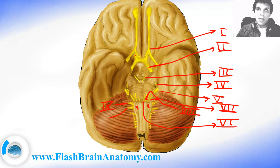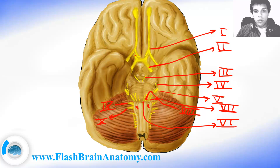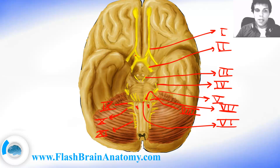Cranial nerve number ten is the vagus. It receives the special sense of taste and provides parasympathetic fibers to almost all thoracic and abdominal viscera. Then comes cranial nerve number eleven, the accessory nerve, which controls the sternocleidomastoid and trapezius muscles and overlaps with the functions of the vagus nerve.